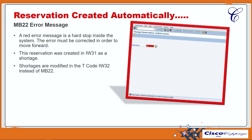The second takeaway is that after getting further information from the end user, we learned this reservation was created in IW31 as a shortage. Shortages are modified in the transaction code IW32 and cannot be modified in MB22.